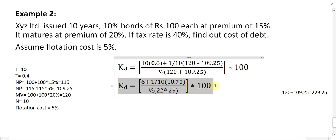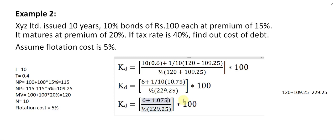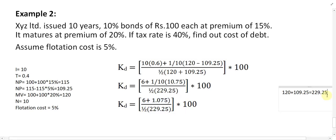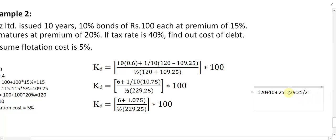Dividing 229.25 by 10 gives 1.075 for the numerator component. For the denominator, divide (MV plus NP) by 2: 229.25 divided by 4 — adjusting the calculation — gives 114.625. So the denominator is 114.625.